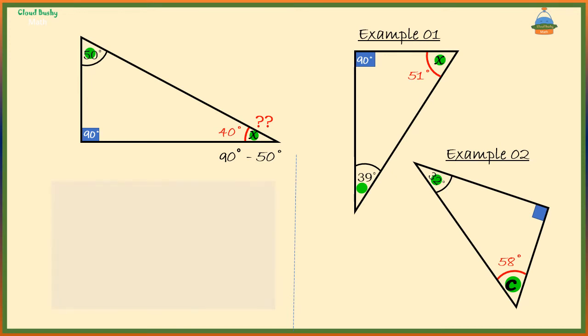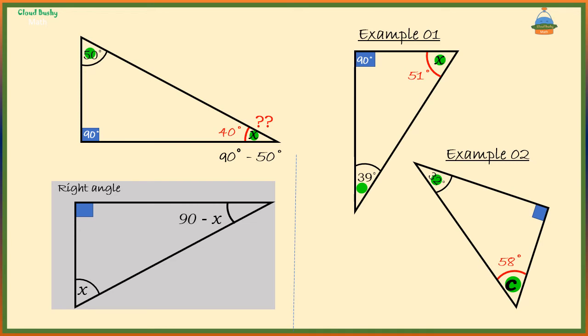So we are saying if we have a right angle and one of the remaining two angles is given as x, then the other angle should be 90 minus x. Otherwise, if this angle is x and that one is y, it means x plus y is equal to 90 degrees.